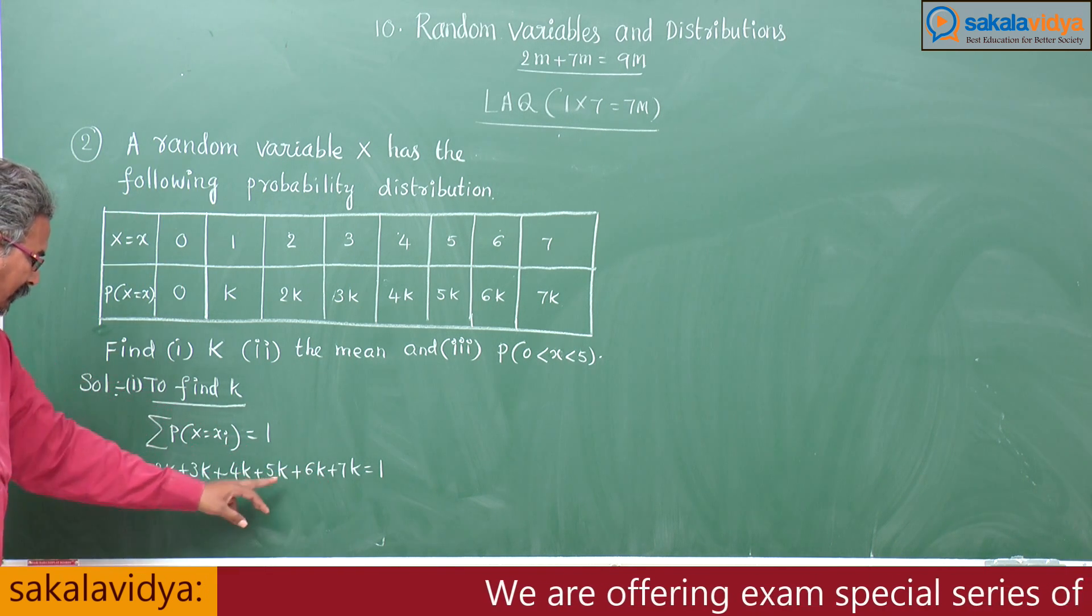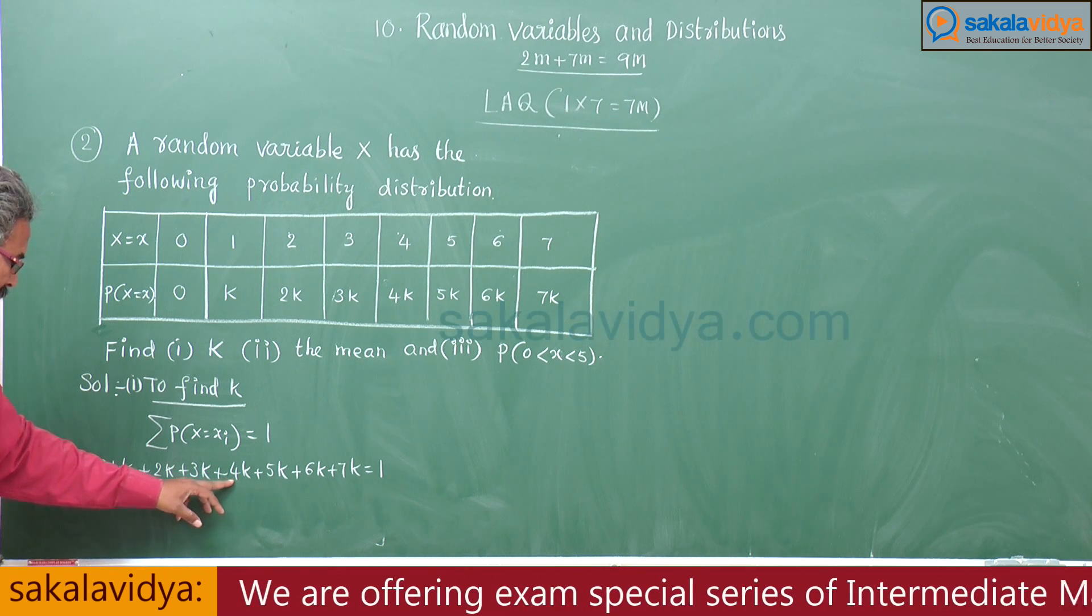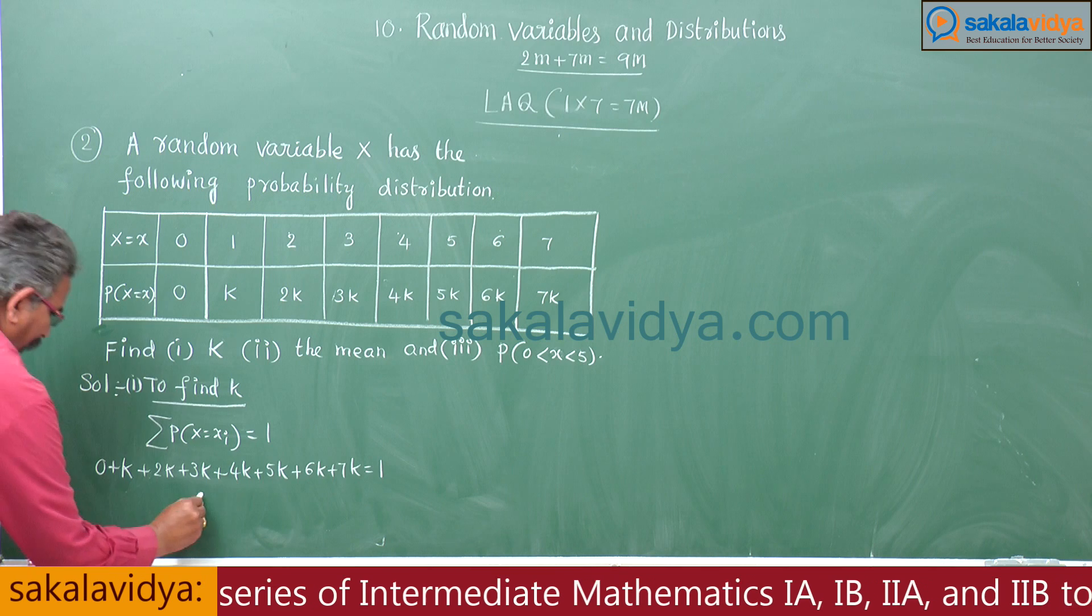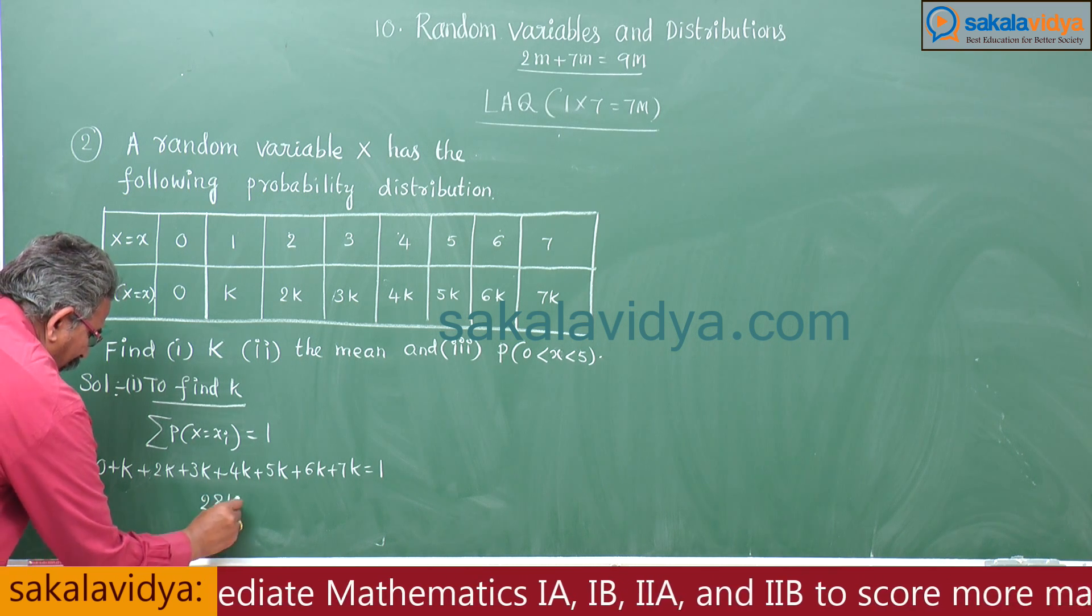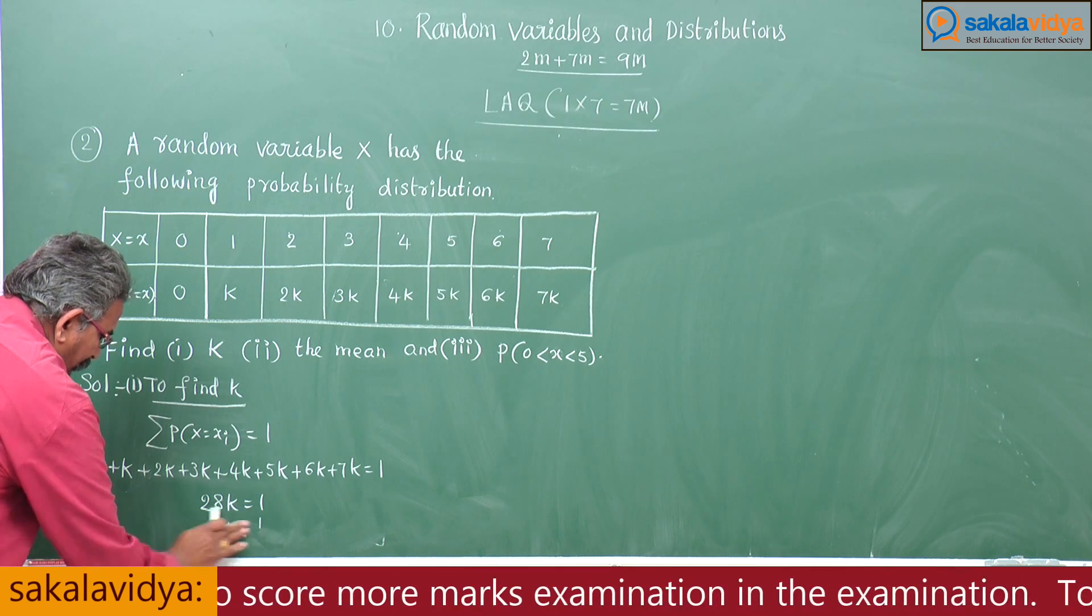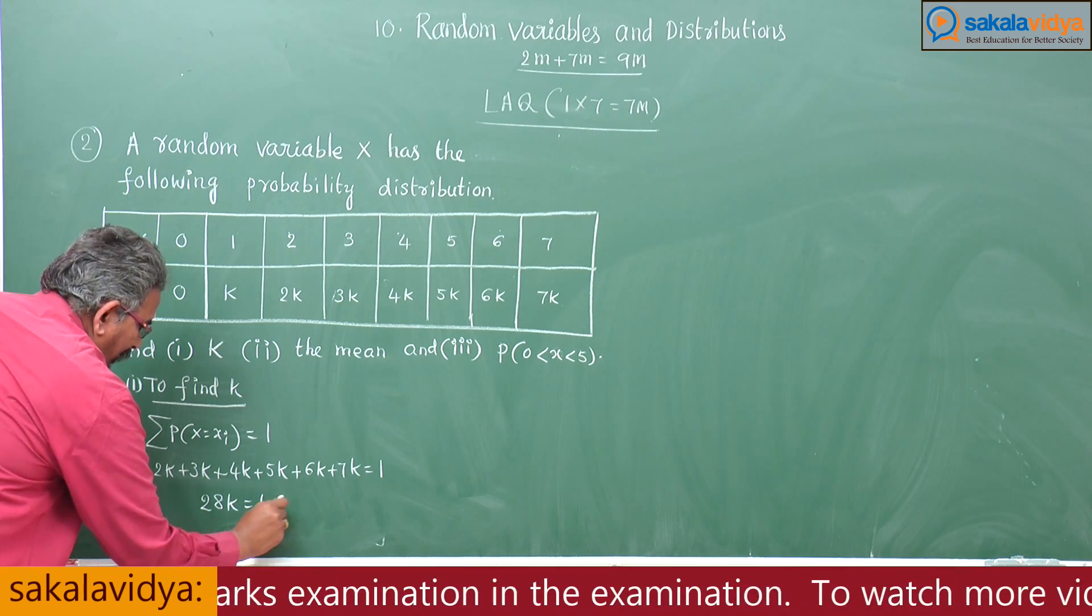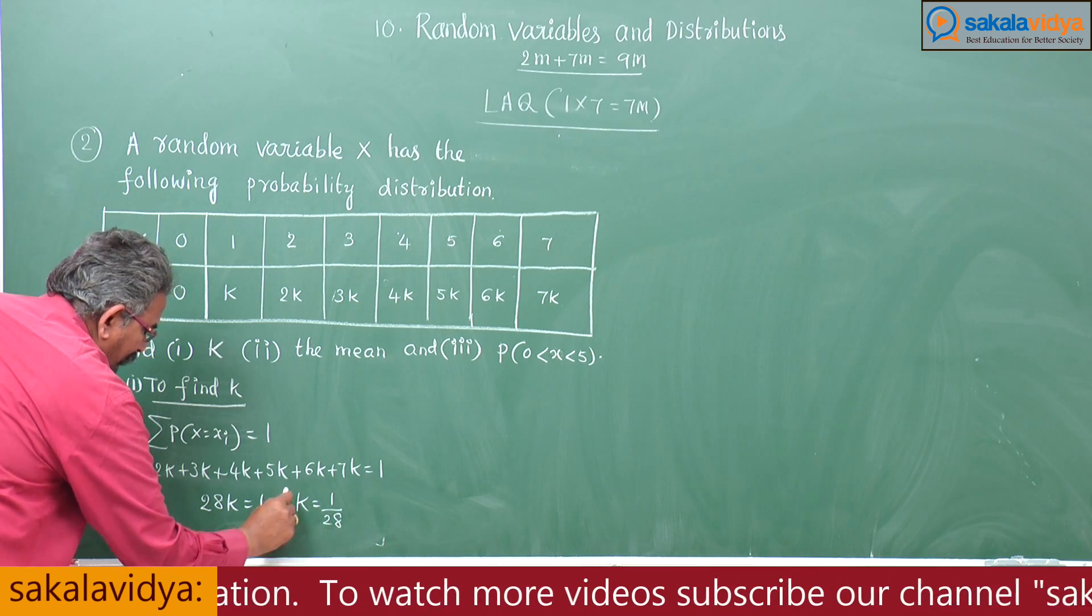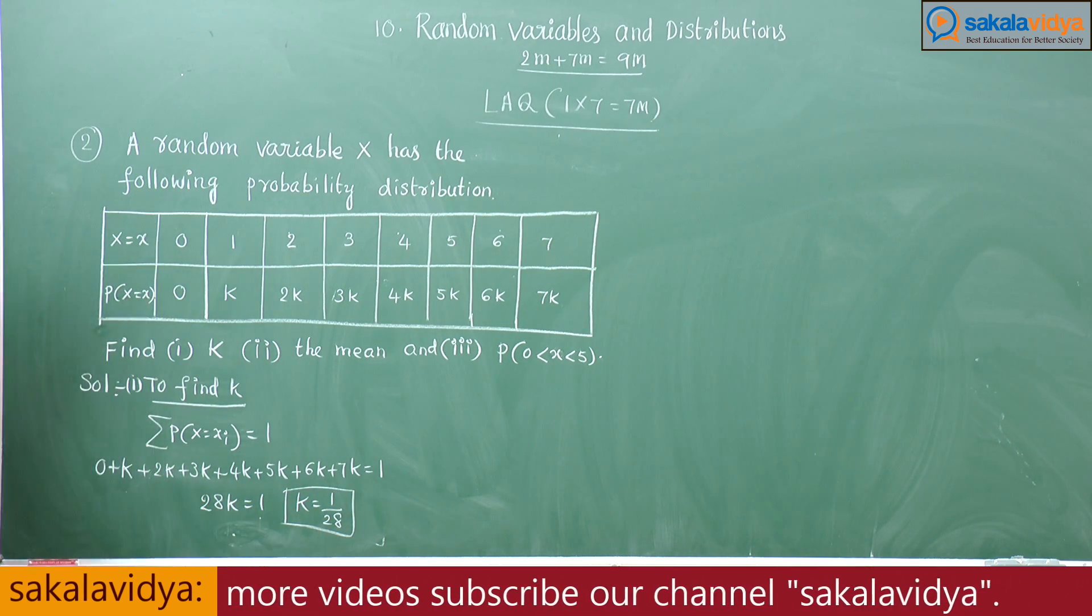Now, 13, 18, 22, 25, 27, 28. 28K equals 1. So K is equal to 1 by 28. This is the K value.